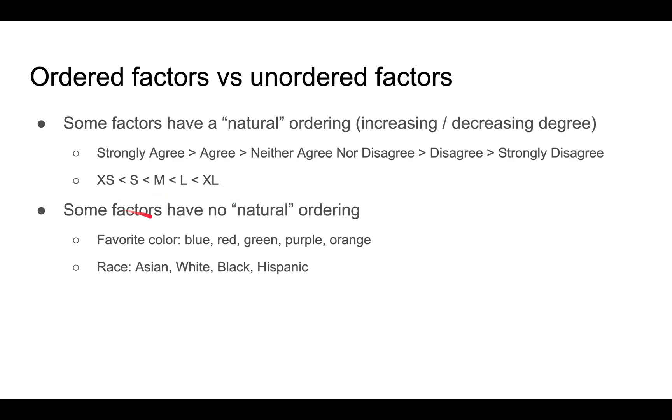On the other hand, some factors don't have a natural ordering, such as favorite color or race. Basically, they're just different levels, and there's no automatic ordering from least to most.